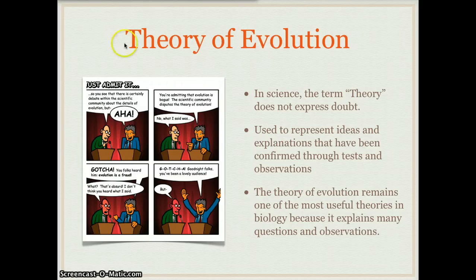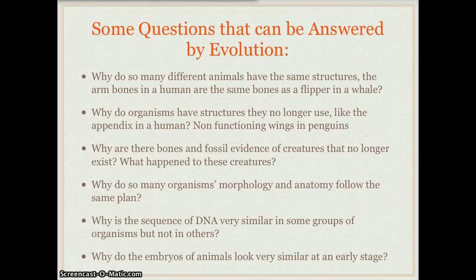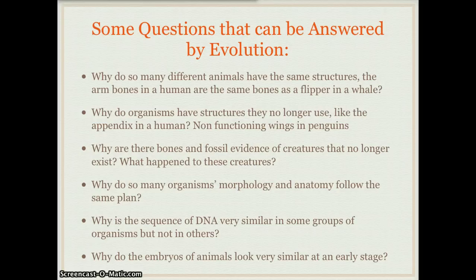The theory of evolution is one of the most useful theories in biology because it explains many questions and observations. Some of those questions are: why do so many different animals have the same structures, such as the arm bones in a human and the flipper in a whale? Why do organisms have structures they no longer use, like the appendix or non-functioning wings in penguins? Why are there fossils of creatures that no longer exist? Why do so many organisms' morphology and anatomy follow the same plan? Why is DNA sequence very similar in some groups but not others? And why do embryos of animals look very similar at early stages?